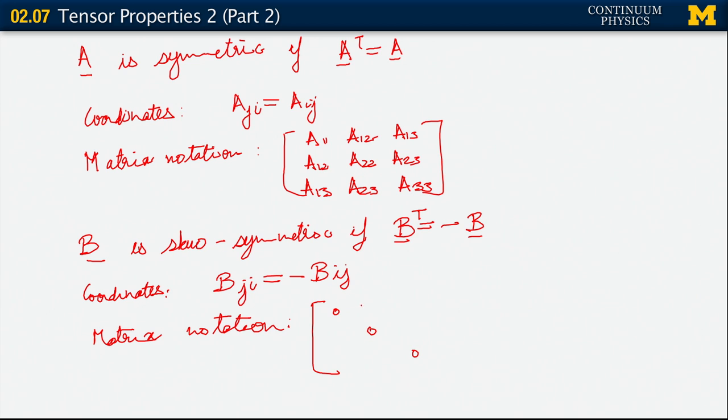And the off diagonal components are negatives of one another. So we can have B_12, B_13, B_23, minus B_12, minus B_13, and minus B_23.